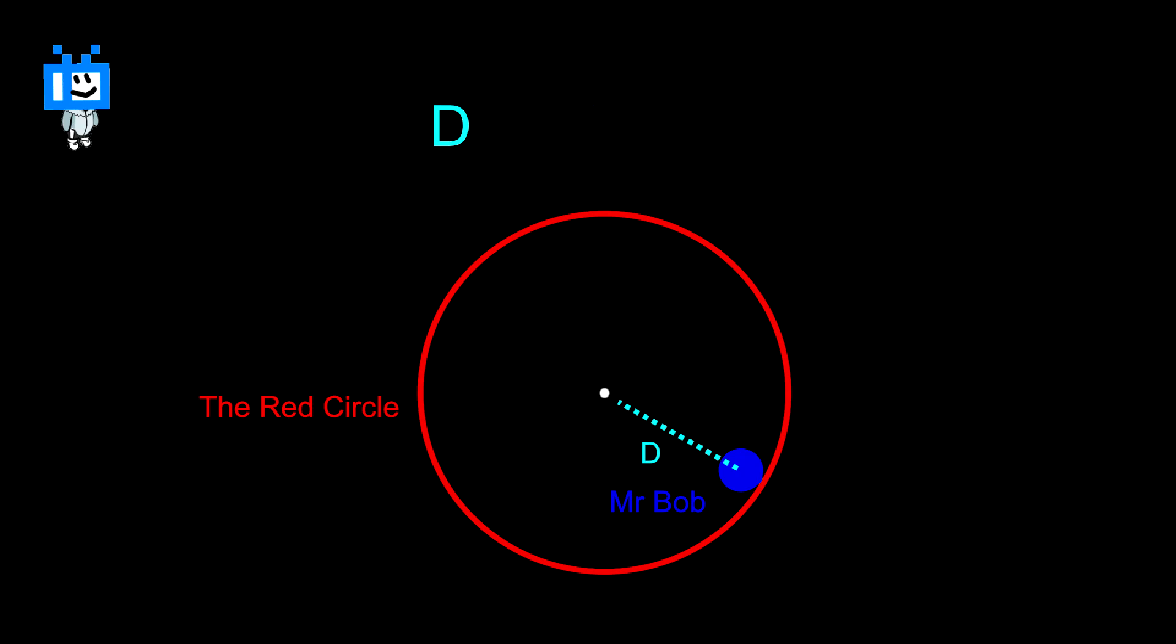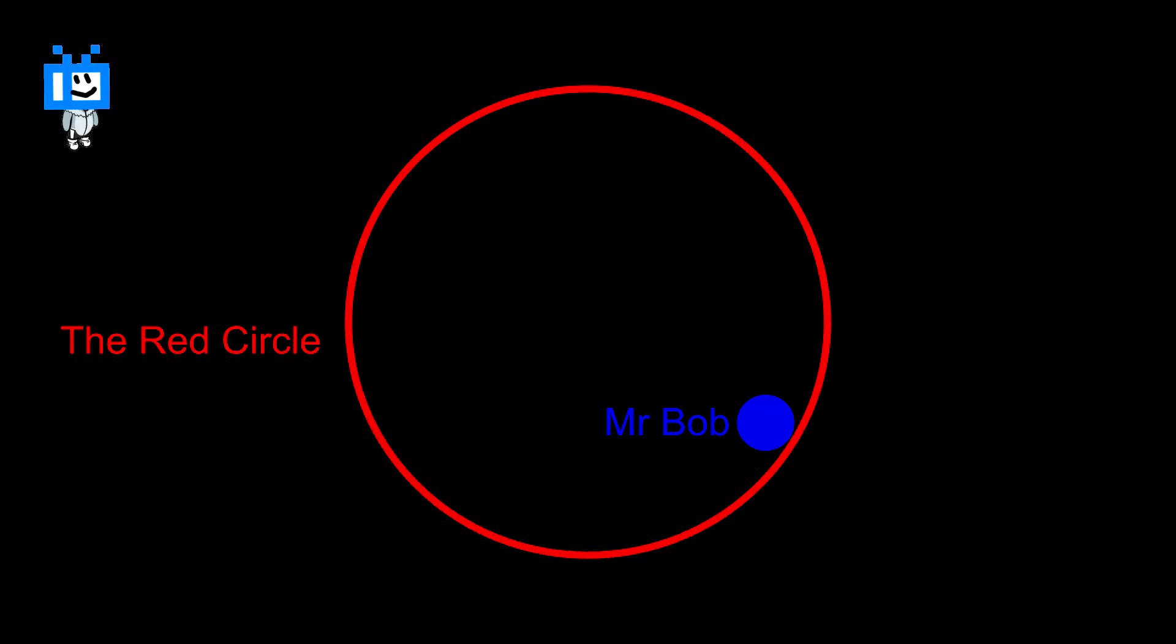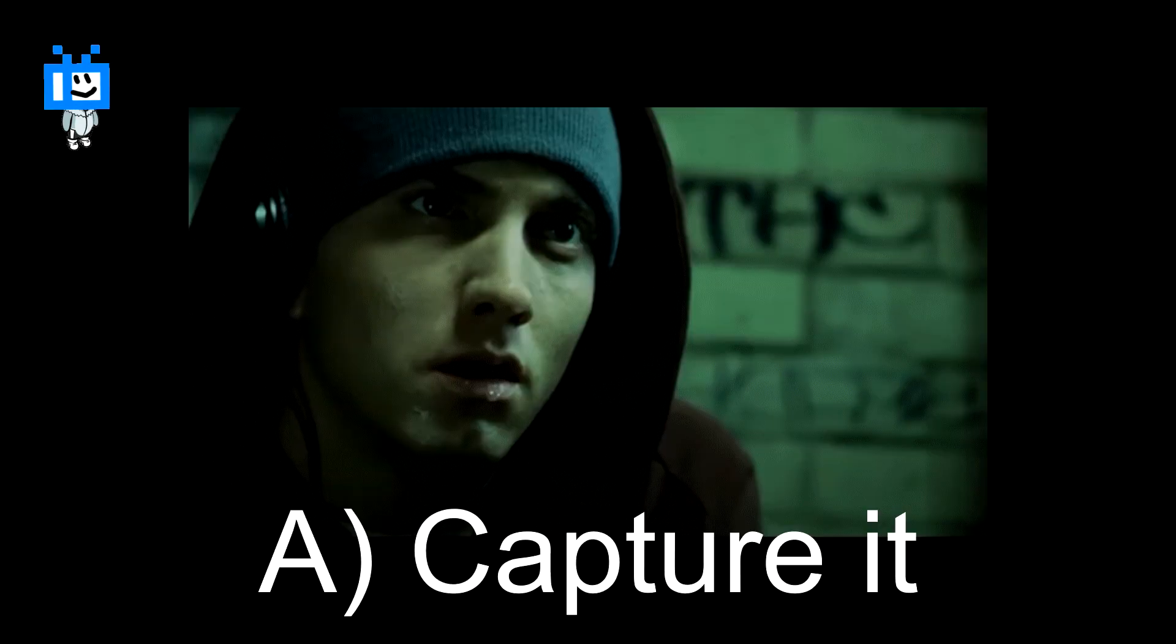This gives us the beautiful condition that Mr. Bob's distance from the center, let's say D plus R2 its radius, cannot be greater than R1, the red circle's radius. If it was to be greater, Bob would be penetrating the red circle, which is very inappropriate. As soon as D plus R2 exceeds R1, that's our moment. Do we capture it or just let it slip? Yo, his palms are.